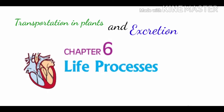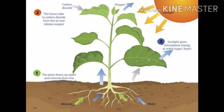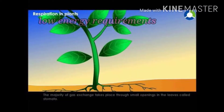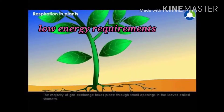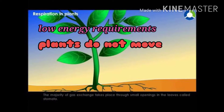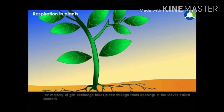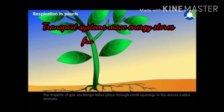We have discussed earlier how plants take in simple compounds such as carbon dioxide and photosynthesize energy stored in their chlorophyll-containing organs, namely leaves. For plants, soil is the nearest and richest source of raw materials like nitrogen, phosphorus and other minerals. Therefore, energy needed for absorption of these materials is low for plants as compared to the energy requirements for animals to get their minerals. Plants do not move and have a large proportion of dead cells, so plants have low energy needs.